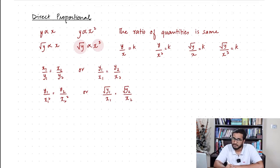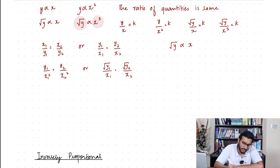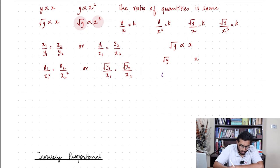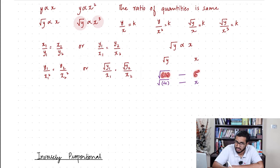But there is a simpler way of doing this — using the ratio method. If two quantities are directly proportional, you can simply write it down as follows. For example, say √y was proportional to x. If the value of y was 2, and the value of x was 5, and if the value of y now increases from 2 to 4, what will be the new value of x?